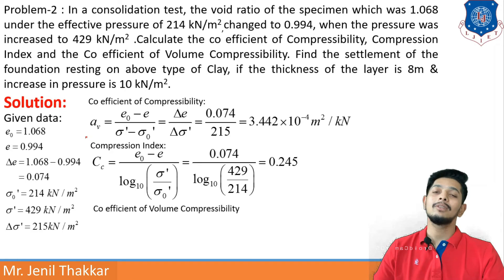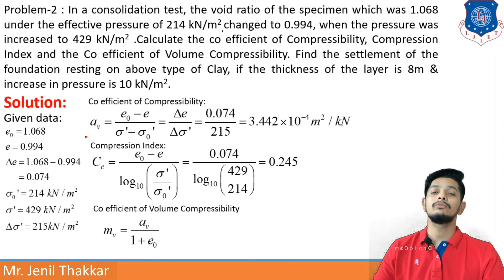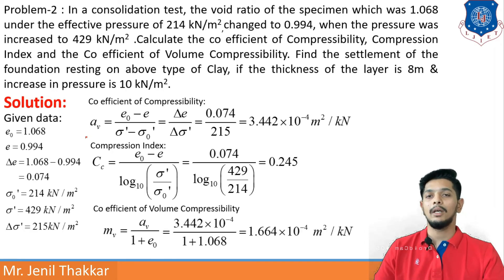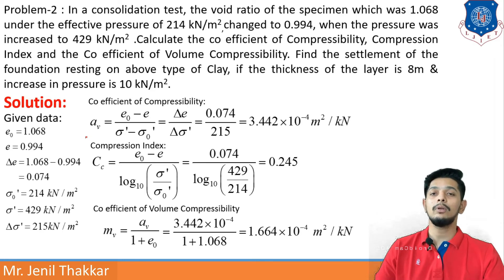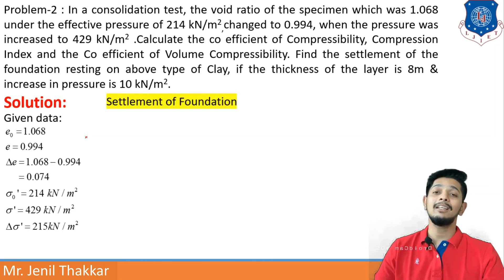Moving to the third item: the coefficient of volume compressibility Mv. The formula is Mv = Av / (1 + E0). With Av already found and E0 = 1.068, the value of Mv comes out as 1.664 × 10⁻⁴ m² per kN. So these are the basic three parameters.